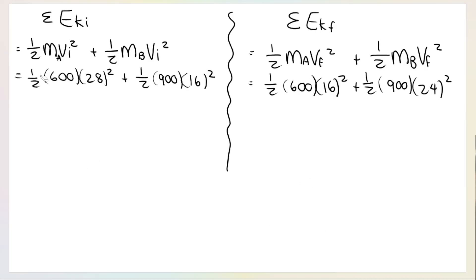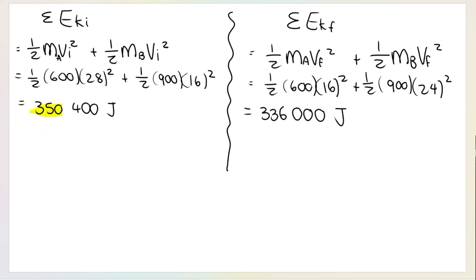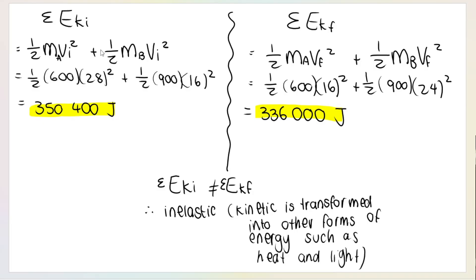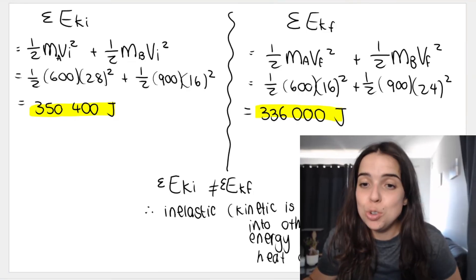Substitute in what you know. For initial: half × 600 × 28² + half × 900 × 16². For final: half × 600 × 16² + half × 900 × 24². Remember to square the velocities — if you don't, you'll get the whole thing wrong. Take your calculator, work out the sum of the initial kinetic energy, get an answer, work out the sum of the final kinetic energy, get an answer. The unit is joules. If the initial and final kinetic energies are not the same, we write: sum of EK initial does not equal sum of EK final — therefore the collision is inelastic, because kinetic energy was lost and transformed into other forms such as heat and light.